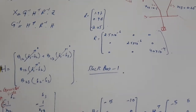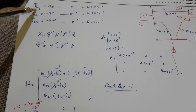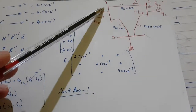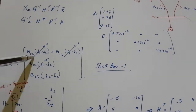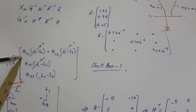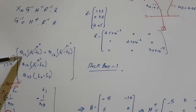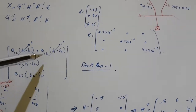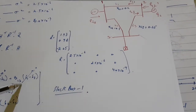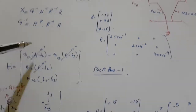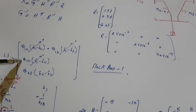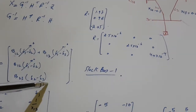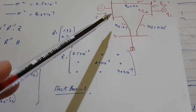The most important step in every state estimation is the H matrix. For H, the first row corresponds to TG1 — generator 1 is feeding from line 1-to-2 and 1-to-3, so you write B12*(del1 - del2) + B13*(del1 - del3). These are the state variables we have to find. Next, T12 gives B12*(del1 - del2), and T23 gives B23*(del2 - del3).